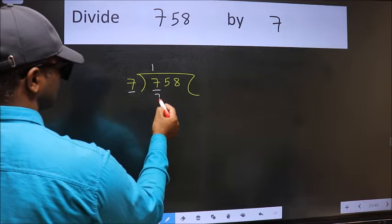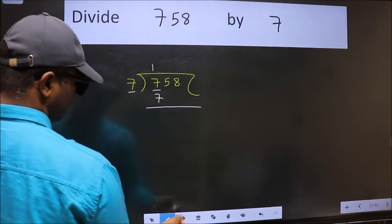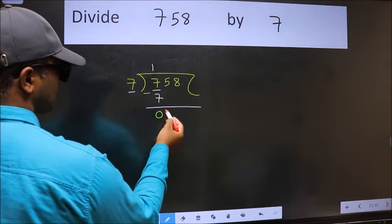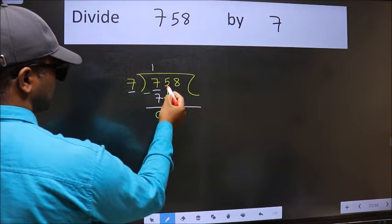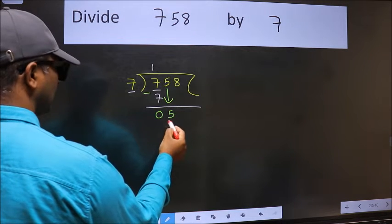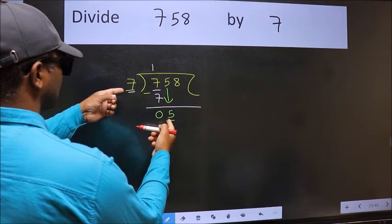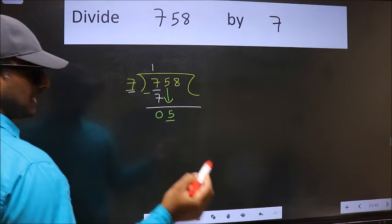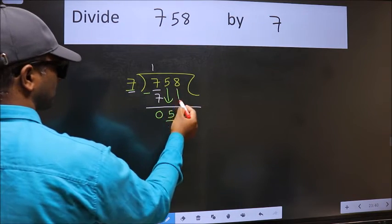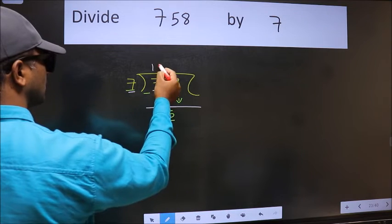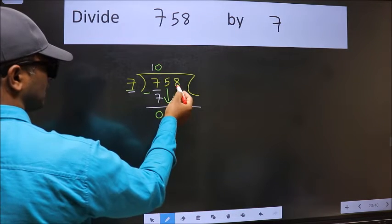After this, bring down the beside number, so 5 comes down. Now here we have 5 and here 7. Five is smaller than 7, so we should bring down the second number. The rule to bring down the second number is we should put zero here, then only we can bring this number down.